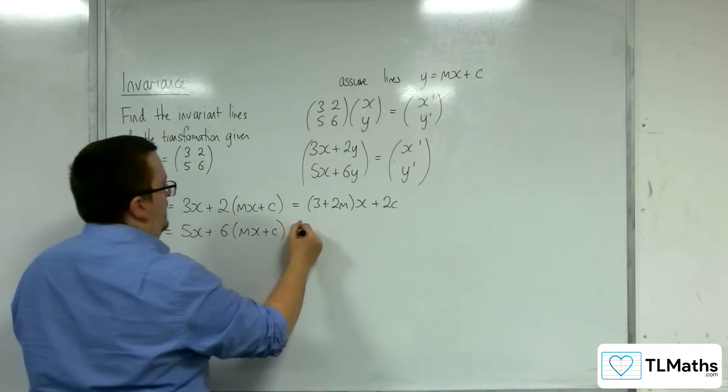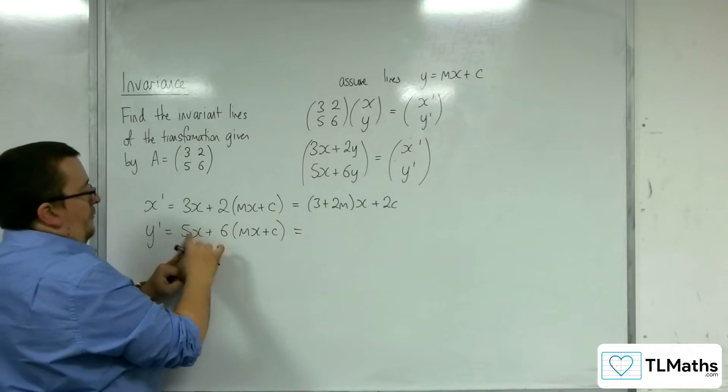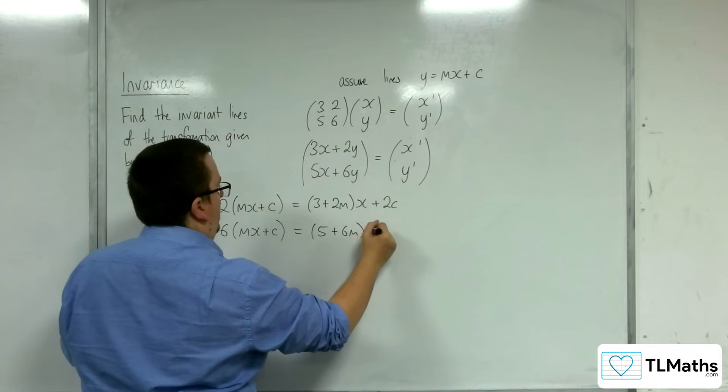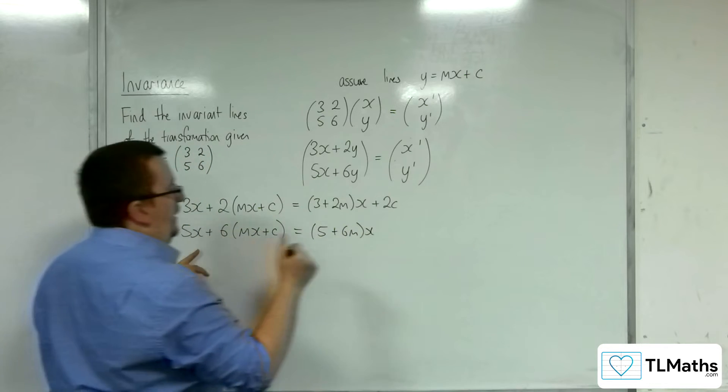And likewise here, I've got 5x plus 6mx, so pulling the x out, 5 plus 6m times x plus 6 lots of c.